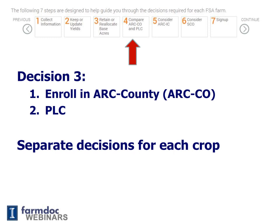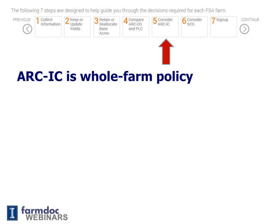Step four suggests you maximize your program choice for each crop and then compare it to ARC IC, which is a whole farm program. ARC IC lumps together all crops on your FSA farms and also combines all FSA farms involved in ARC IC. There are a number of reasons why we believe most farmers will not choose this option, and those are covered in more detail in step five.